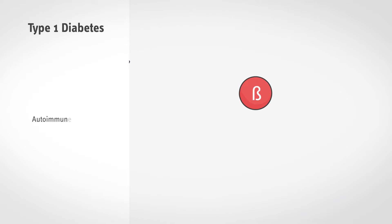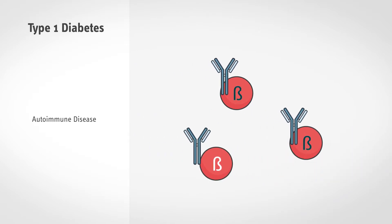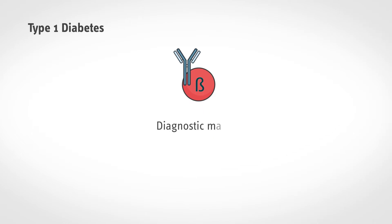In type 1 diabetes, one's own immune system destroys the beta cells. The best markers for this are so-called autoantibodies. They can be detected in the blood. They are currently the best means of detecting type 1 diabetes early.